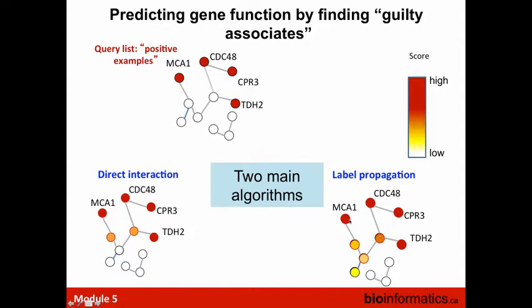Another way of computing the guilty associates is label propagation. In label propagation you allow the score to propagate through the network along links, getting a little bit weaker the further away you get from the initial query list.